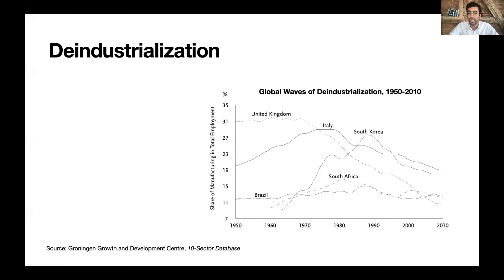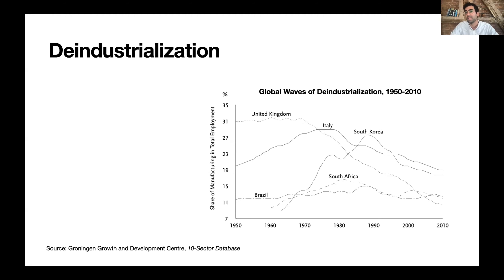Deindustrialization started in the West in the most advanced economies, then affected stepwise more and more countries. Even countries like Brazil and South Africa, which hardly reached the levels of industrial employment share that rich countries had, have gone through what economists like Dani Rodrik have labeled premature deindustrialization. According to the UN, the entire world has been deindustrializing since 2013.